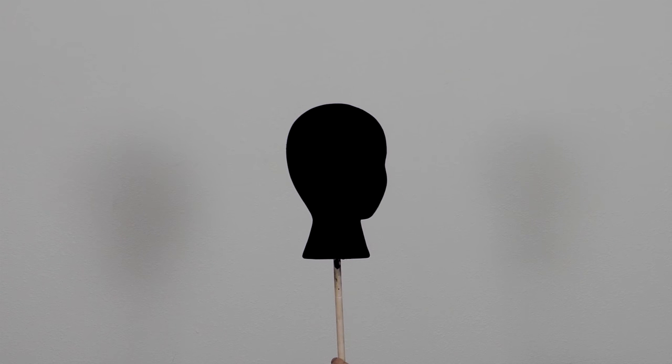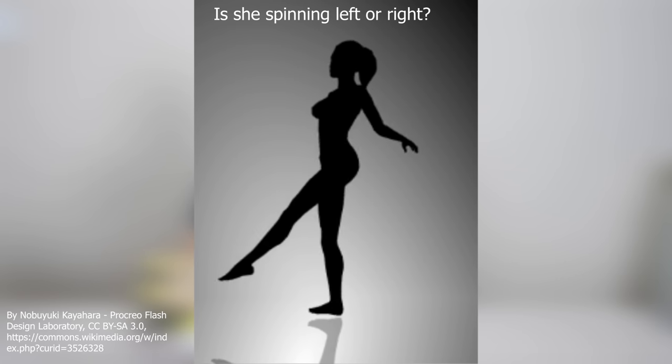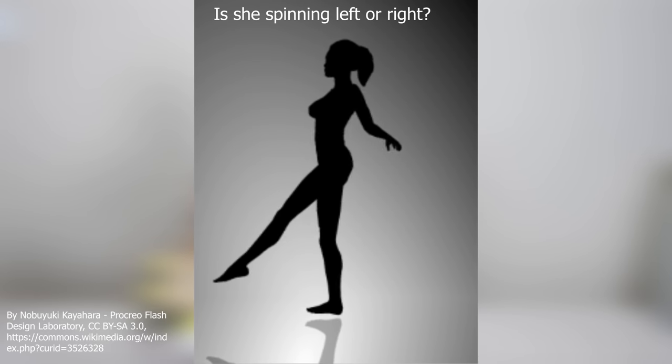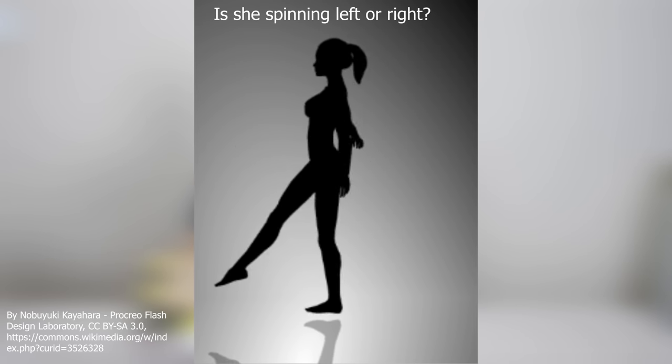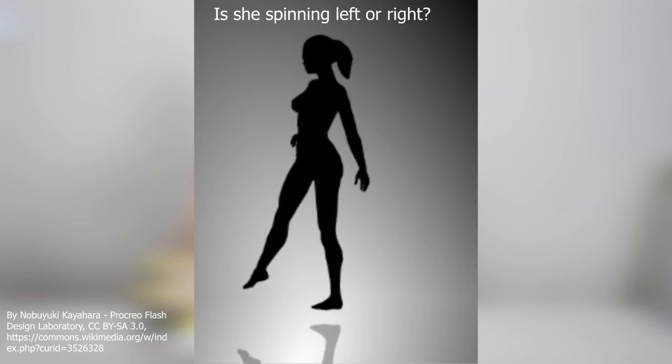So this is actually spinning in the counterclockwise direction. This is the same thing that happens during the spinning dancer illusion. Now in this illusion, you can't tell which way the dancer's spinning because there's no visual cues to tell you which arm is actually in front of the body.